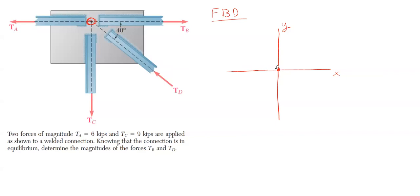We have TA acting to the left only in the X direction, which is 6 kips of force. We have TC acting vertically downward along the Y, and TC is 9 kips as given. We have TB over here along the X axis acting to the right, and that one's unknown. We have to find it, and we will.